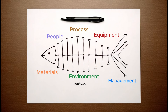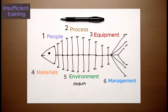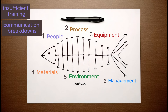Under each category, pinpoint potential causes related to your problem — these are like the smaller bones stemming from the larger ones. For example, under people, you can list issues such as insufficient training, communication breakdowns, or staff turnover. Repeat this process for every category you've chosen.